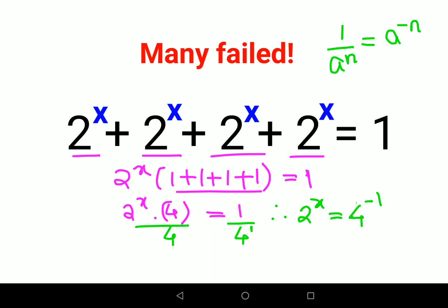Now if you look closely, 4 can be written in terms of 2, so this will be 2 raised to x equals 2 raised to 2, the whole raised to minus 1.